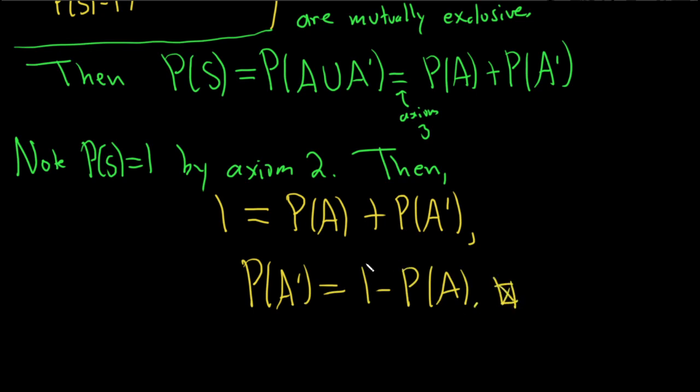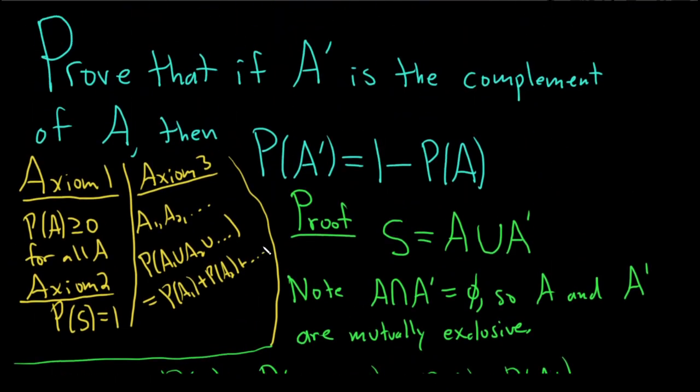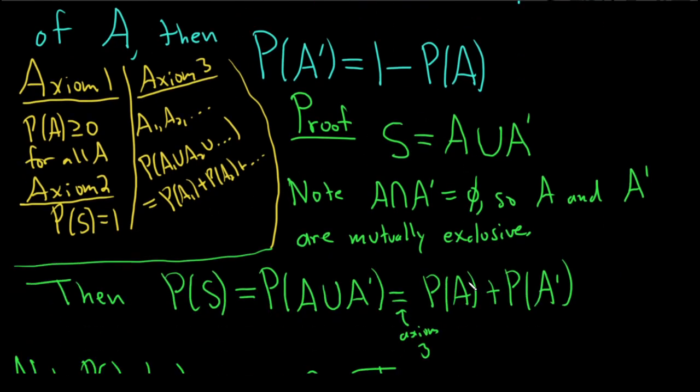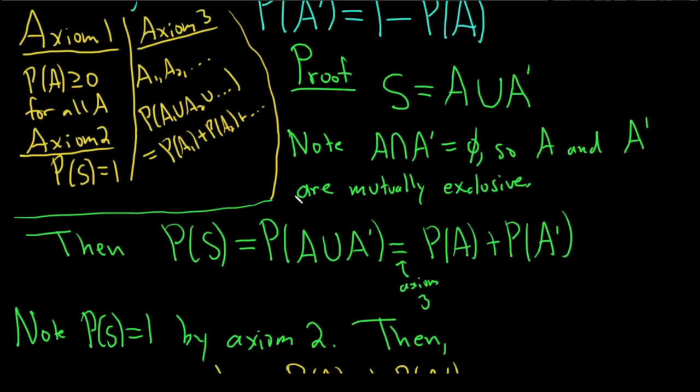So not too bad. You just have to know to use the axioms, obviously, that's what you're supposed to use. And then to get the 1, when you see the 1, you kind of know you have to use this. You say, okay, how can I write the sample space, and how can I involve these? Well, I'll just take the union, and yeah, it works out really, really nice.